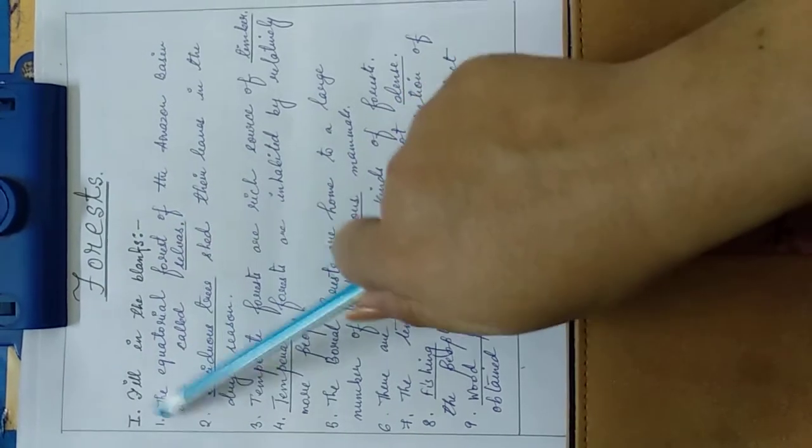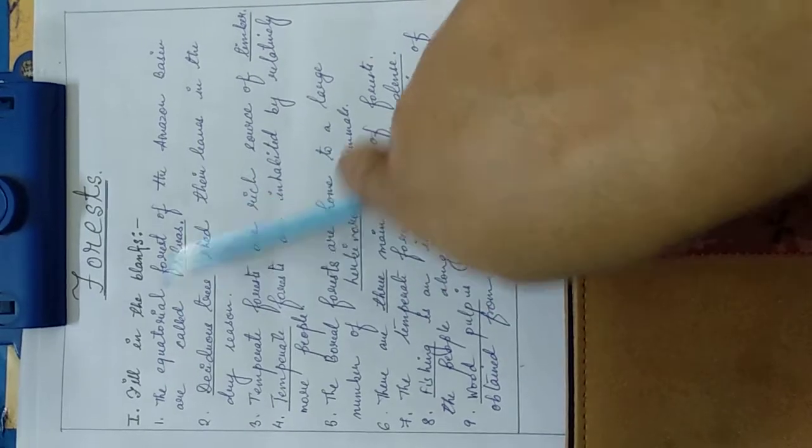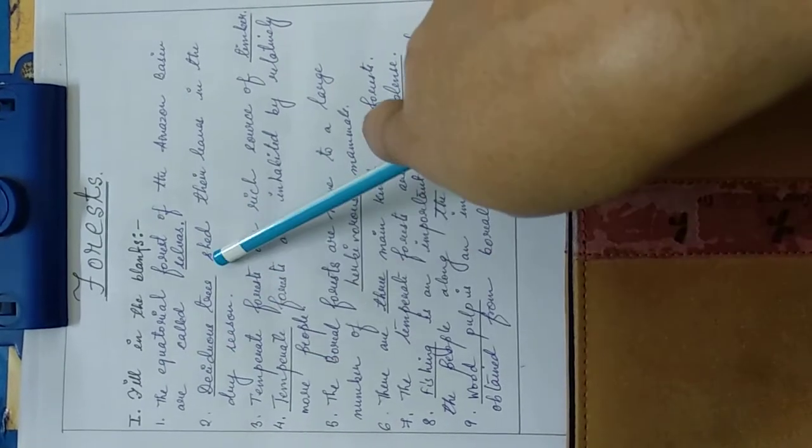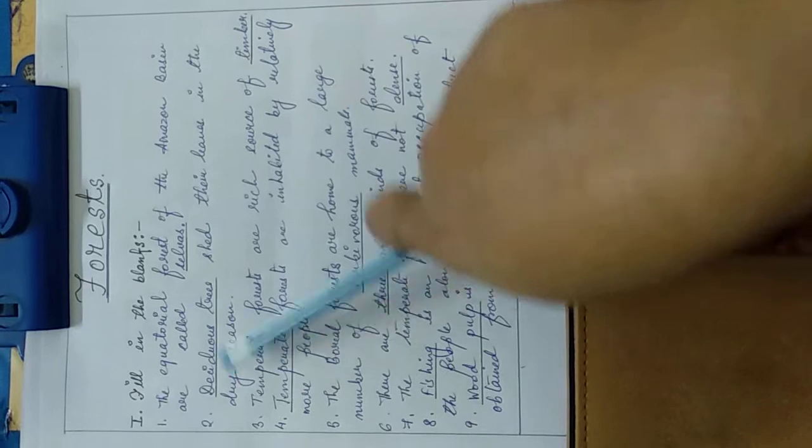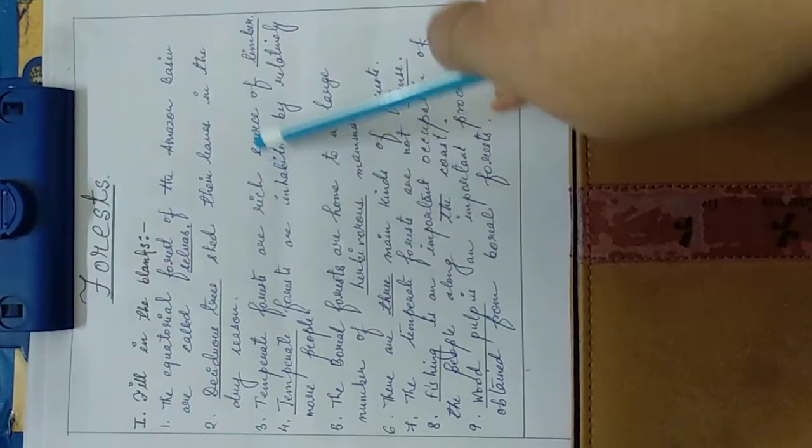Number one: the equatorial forests of the Amazon basin are called selvas. Number two: deciduous trees shed their leaves in the dry season. Number three: temperate forests are a rich source of timber.